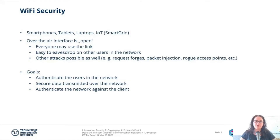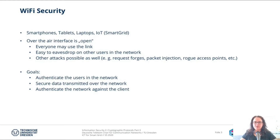I assume that every one of you has at least one device in his pocket that is able to connect to other devices or the internet via Wi-Fi — for example, your smartphone or laptop. Some of you may also have IoT devices at home, like the Google Dot or the Alexa. IoT is not only a thing in private households; it's becoming even bigger in industry currently, and smart grids are some kind of IoT device.